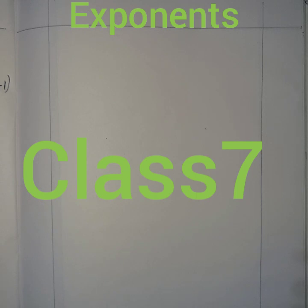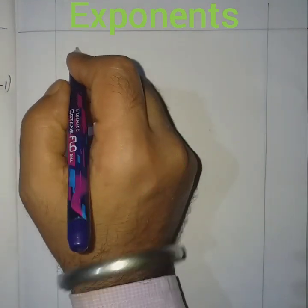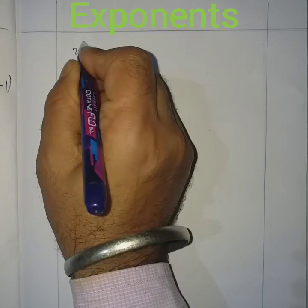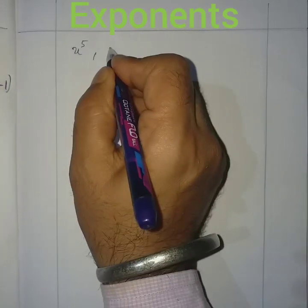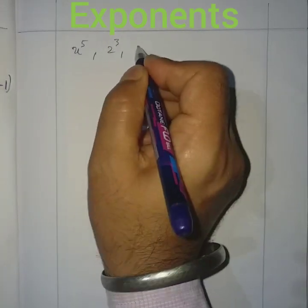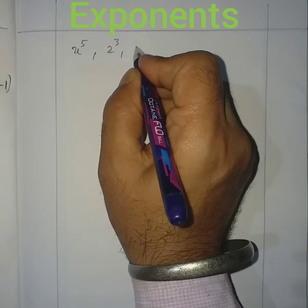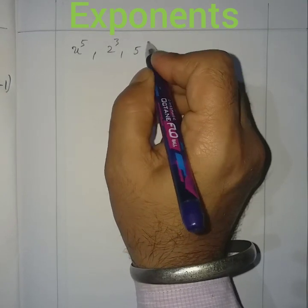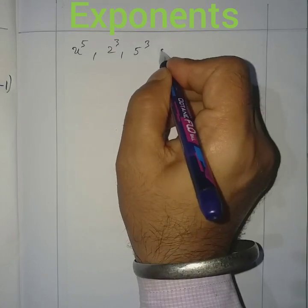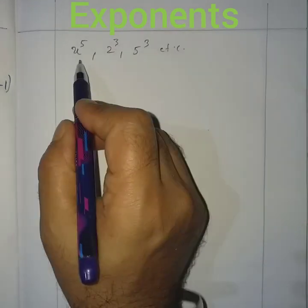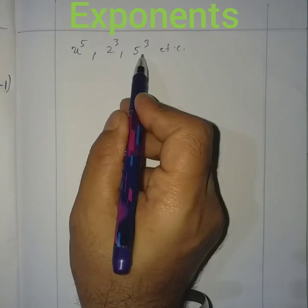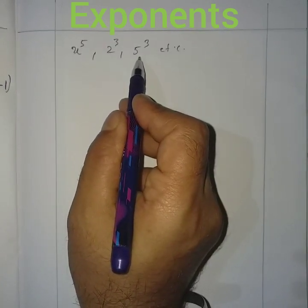So my dear students, you have seen in Class 6 the exponential forms of different numbers — like x to the power 5, 2 to the power 3, 5 to the power 3, etc. These are numbers written in exponential form.